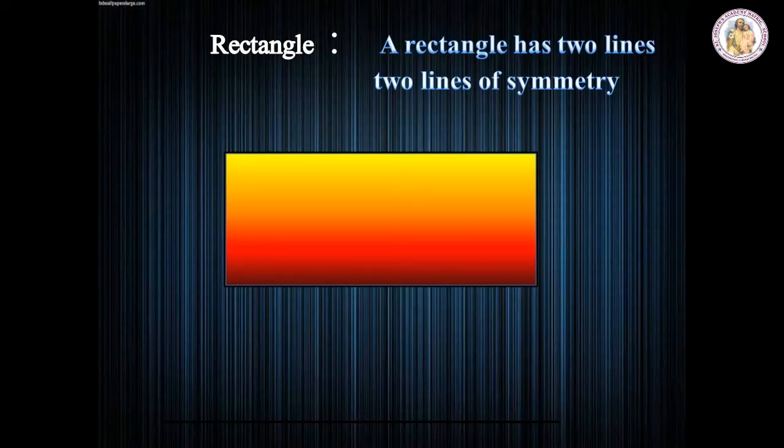See the geometrical shape. What is this? Yes, it is rectangle. So, we have already learnt that rectangle has two lines of symmetry. One is vertical line of symmetry. And another one is horizontal line of symmetry. So, totally rectangle has two lines of symmetry.